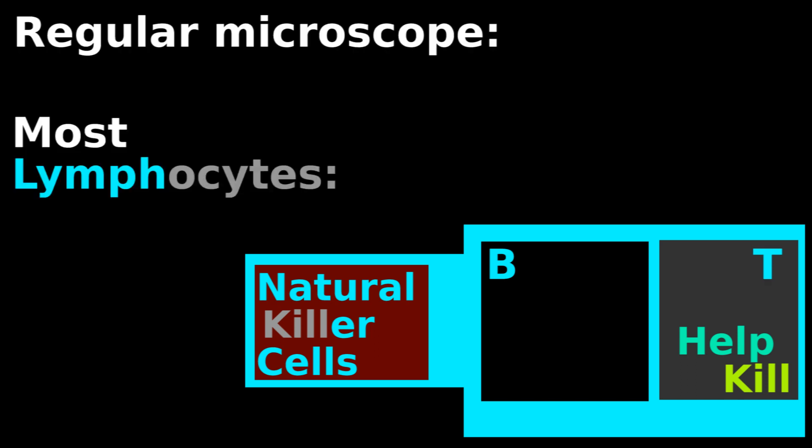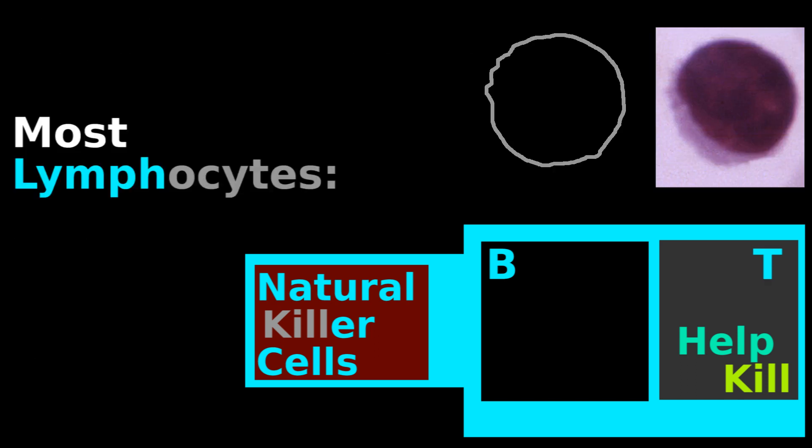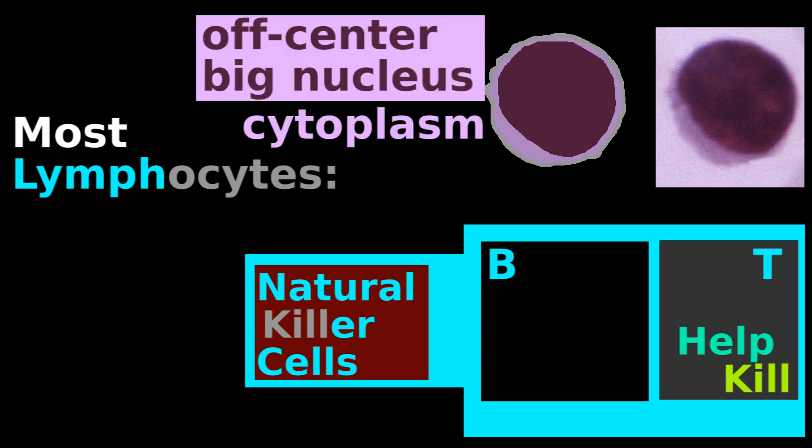Under a regular microscope, most lymphocytes look the same, a cell which is mostly filled with a round nucleus and a bit of cytoplasm.